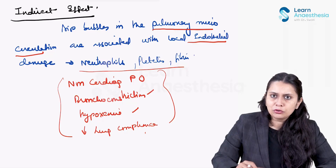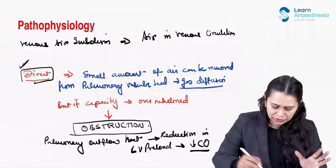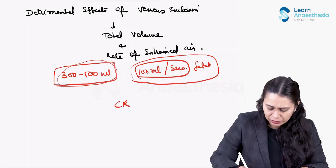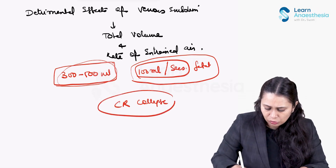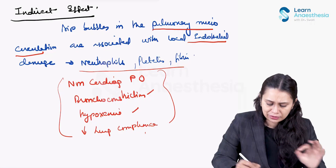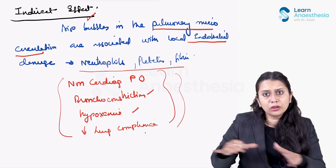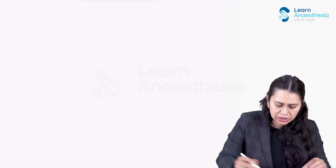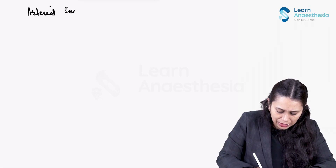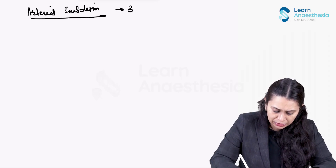So, the direct effect causes cardiorespiratory collapse but only when a large amount of air is embolized. Even with small amounts of air, the indirect effect can produce significant clinical features through endothelial damage and inflammatory mediator release. Now let's talk about arterial air embolism, which has three distinct processes by which it can occur.